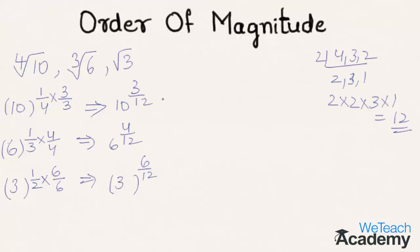Here we can see that orders are same. So now we can write this as 10 cube whole power 1 by 12. Similarly we can write this as 6 raised to the power 4 whole power 1 by 12, and 3 raised to the power 6 whole power 1 by 12.